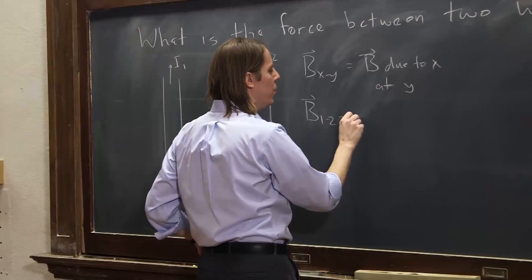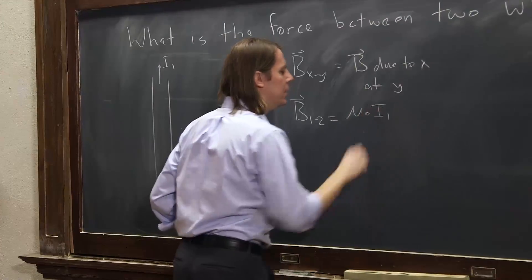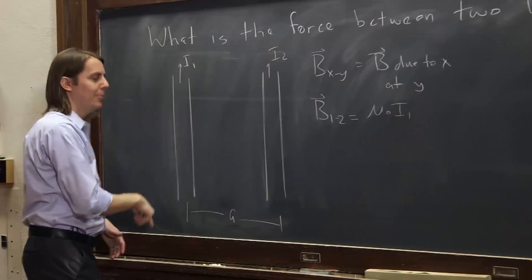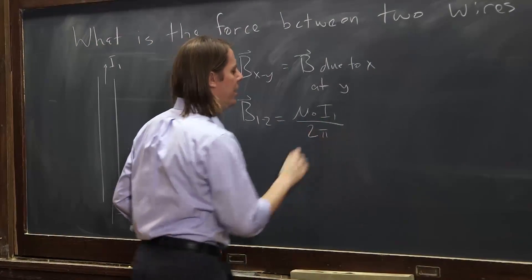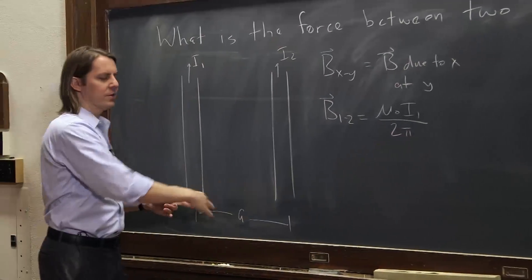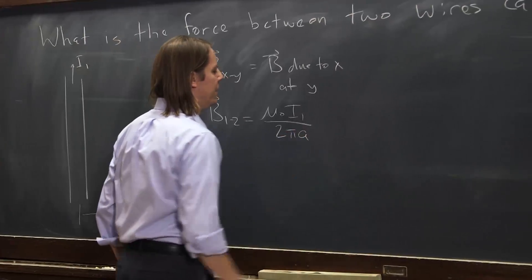Okay, so B12 will be mu naught I1, the field created by I1, mu naught I1 over 2 pi, and instead of r, the separation actually is a. Mu naught I1 over 2 pi a.